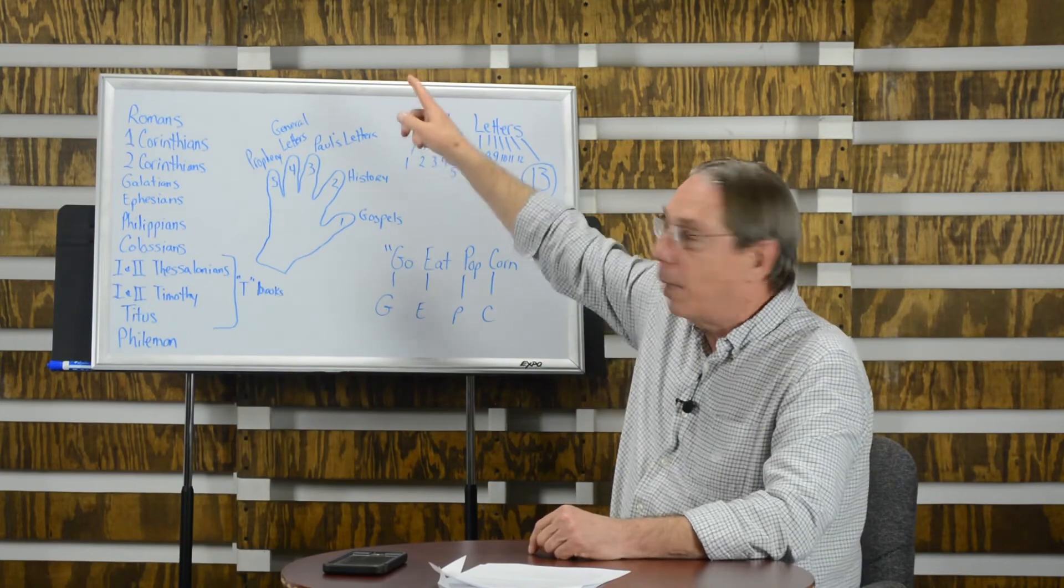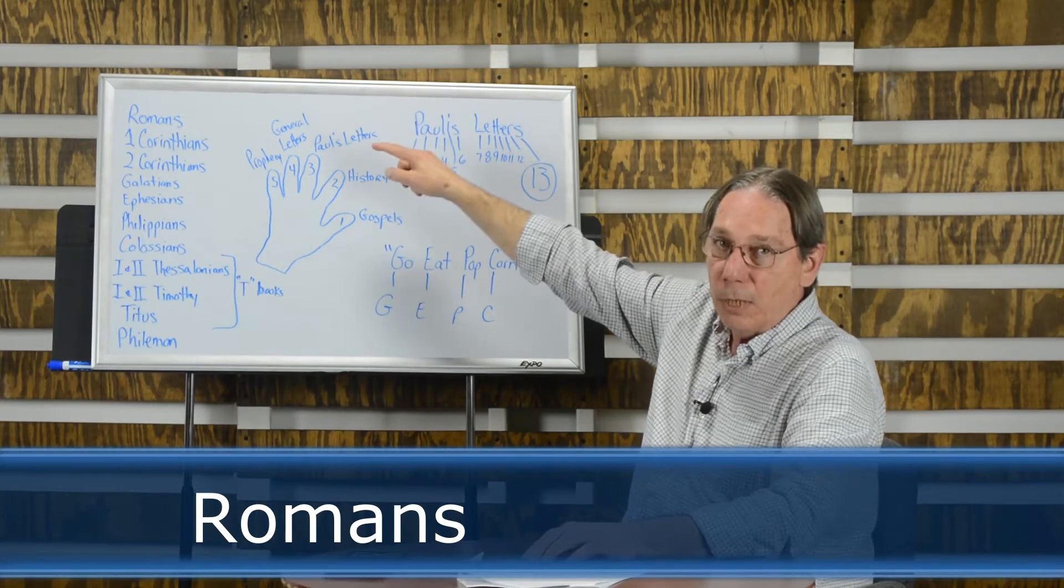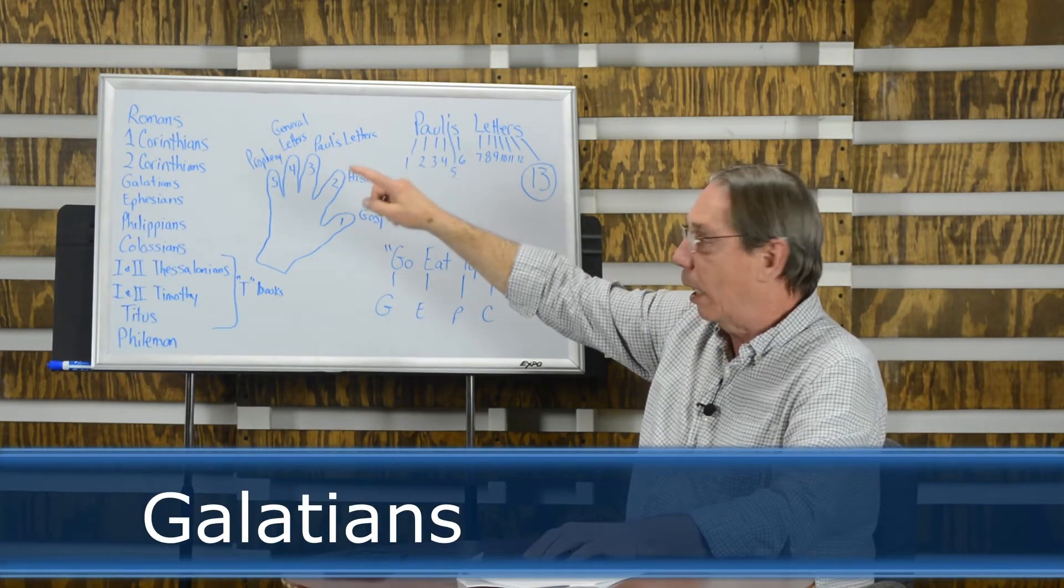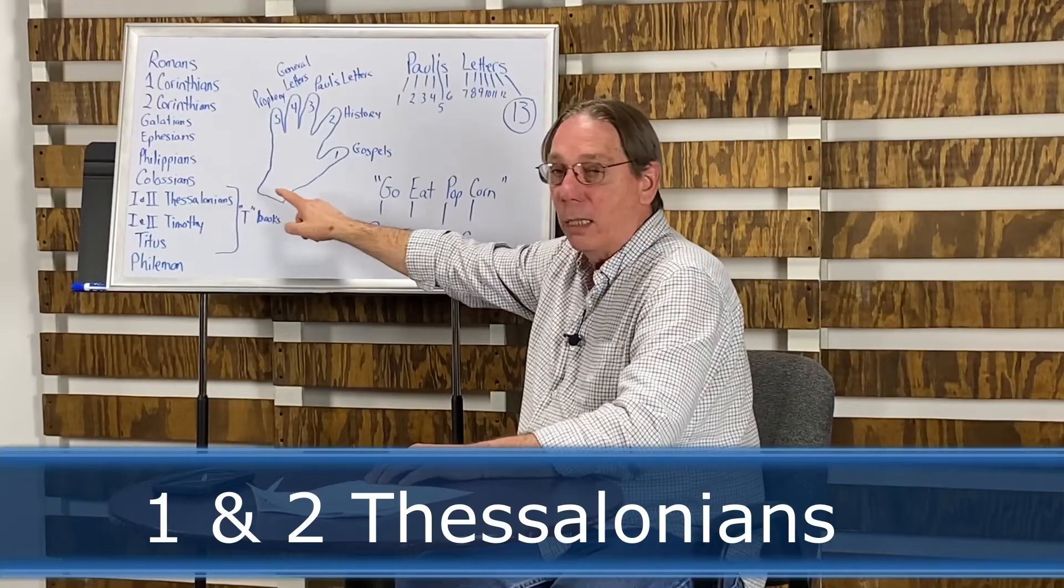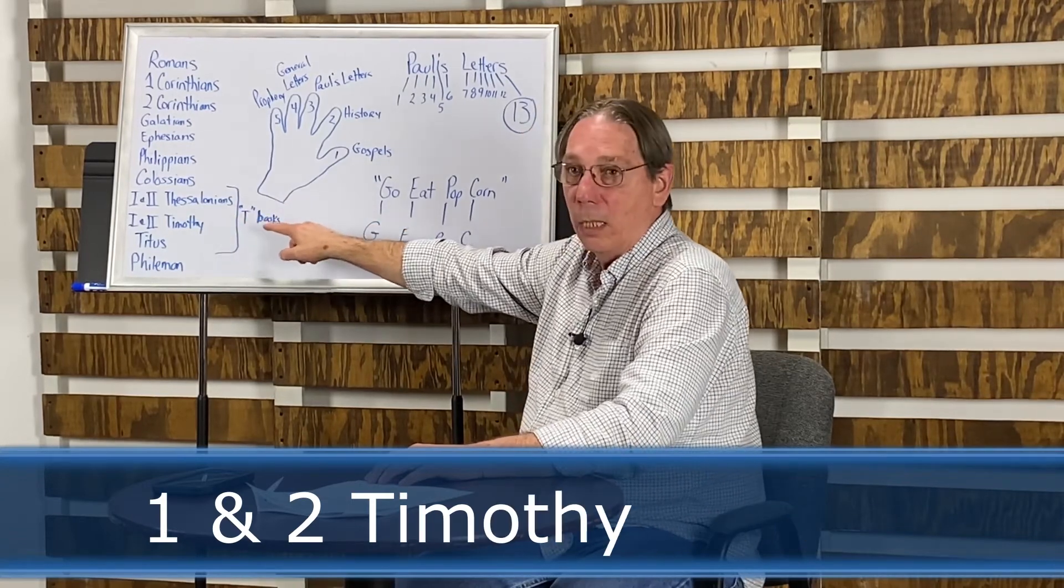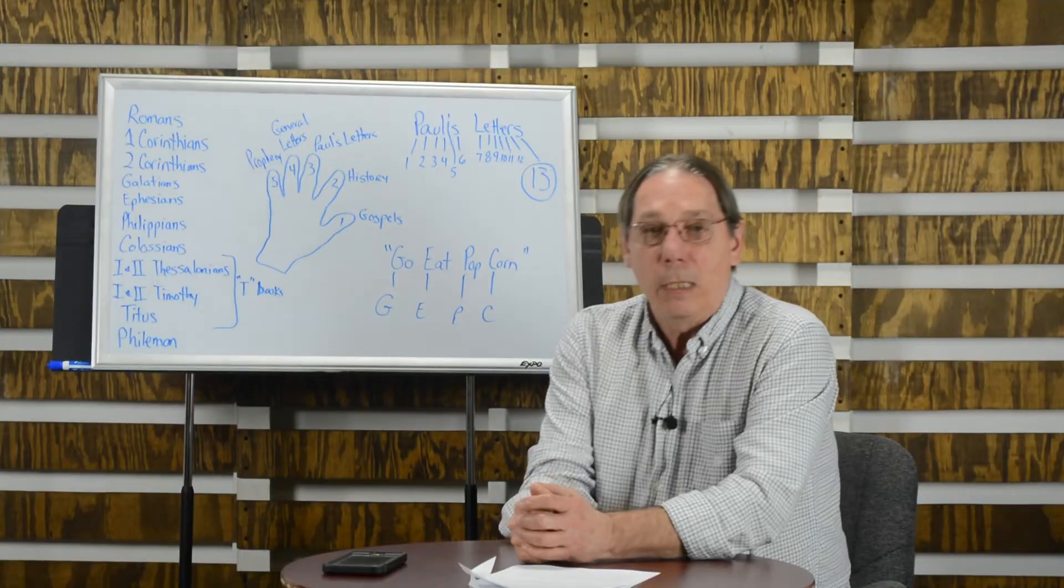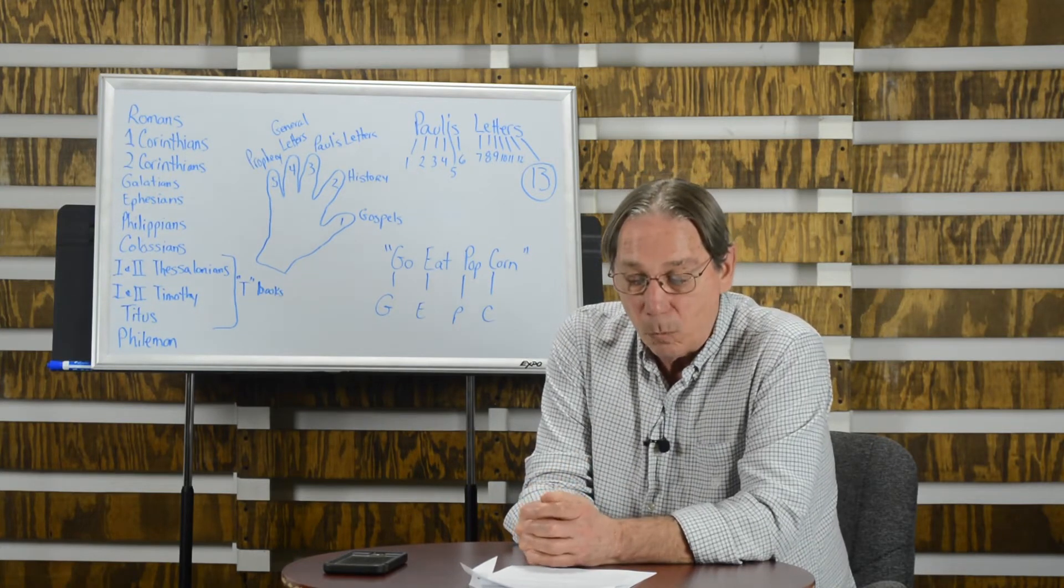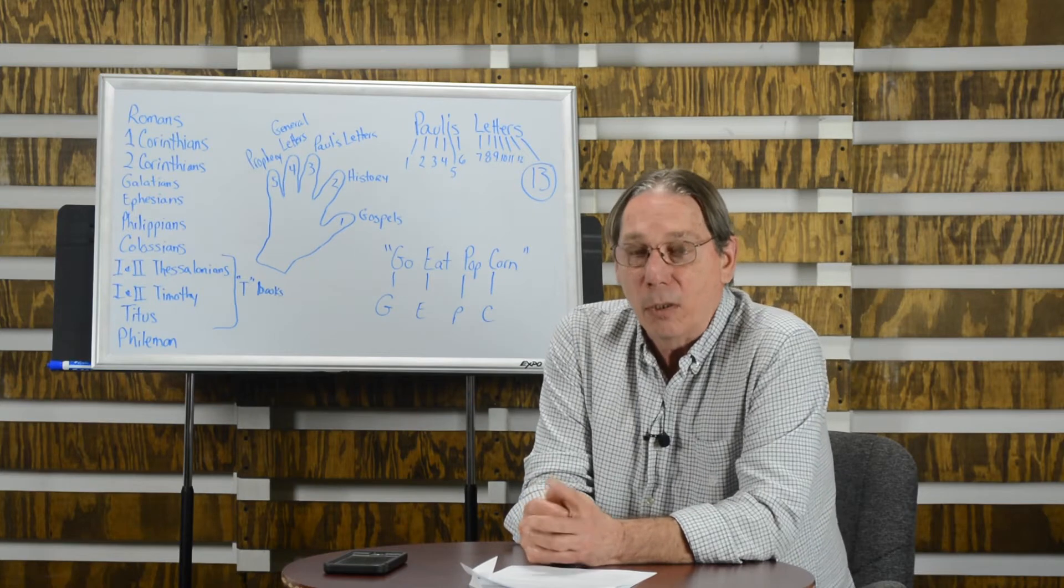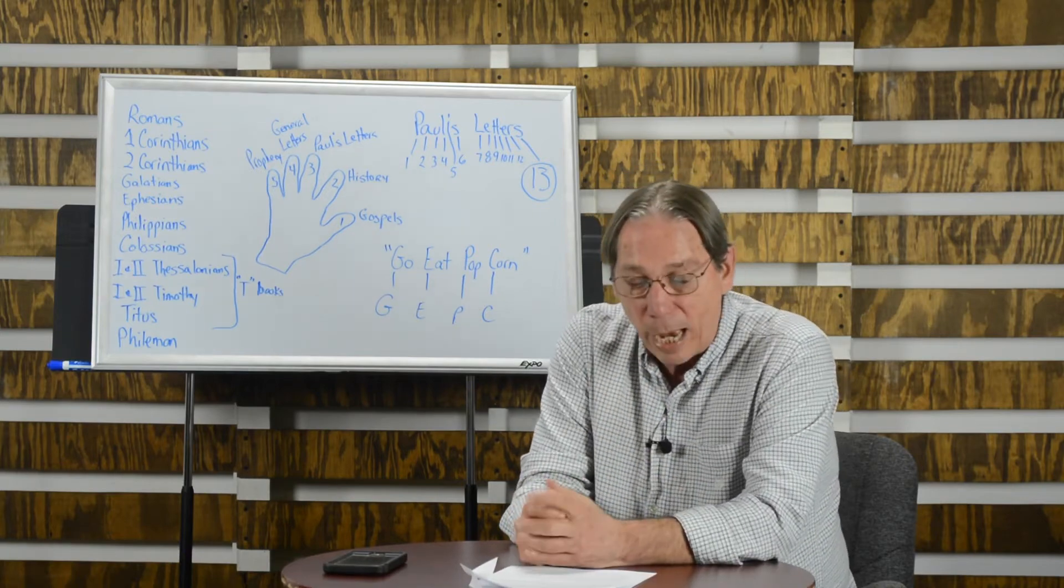Now, let's go from top to bottom and let's see if we can say them together. Romans, first and second Corinthians, Galatians, Ephesians, Philippians, Colossians. Our T books now, first and second Thessalonians, first and second Timothy, Titus, and Philemon. Guys, that's a lot of books. That's 13 books. Add those to the five books we memorized last week. That's 18 of the 27 books of the New Testament. We've almost got the whole New Testament memorized in two weeks. You guys are doing a great job. Hang in there and keep memorizing.